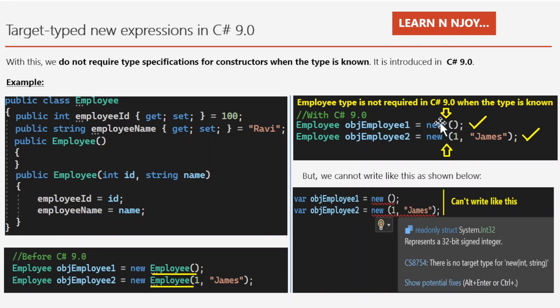In C# 9.0 and later versions, we can make our code more concise and clear. We write: Imply objImply1 = new(); — just the new keyword with parentheses, no type needed on the right-hand side.